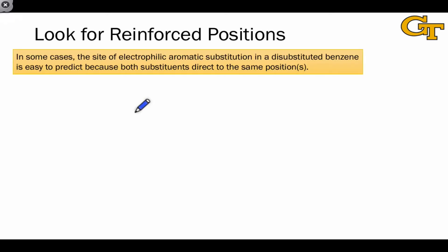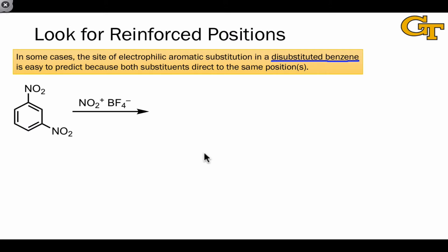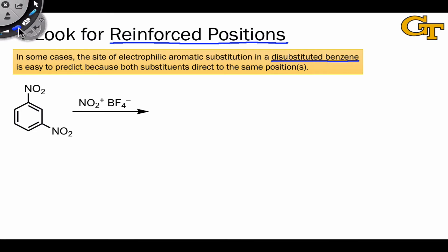When you're trying to predict the product of electrophilic aromatic substitution of a disubstituted benzene, the first thing you should do is assess the positions that are directed to by the two substituents. The main thing you want to look for are what I call reinforced positions — unsubstituted positions that are directed to by both substituents.